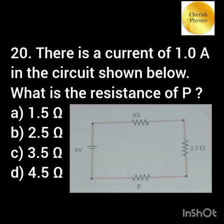There is a current of 1 ampere in the circuit shown below. What is the resistance of P?